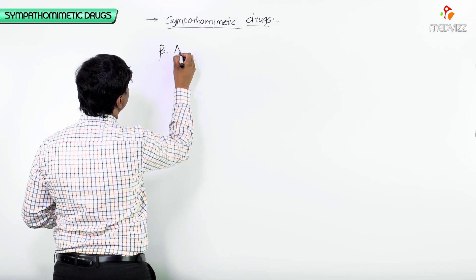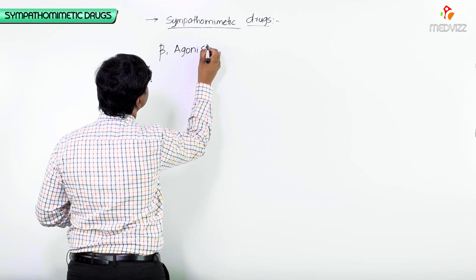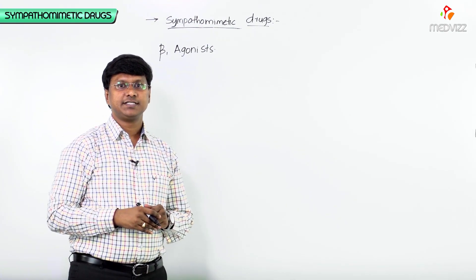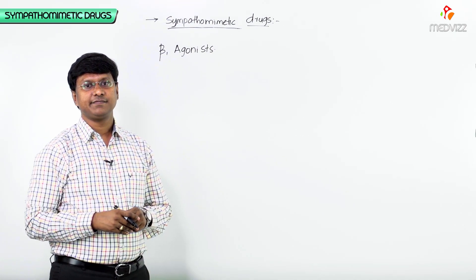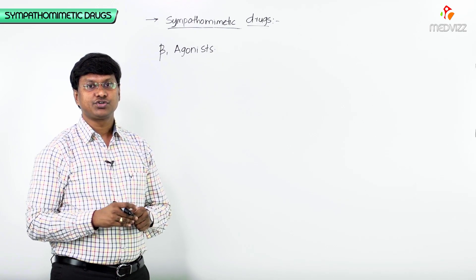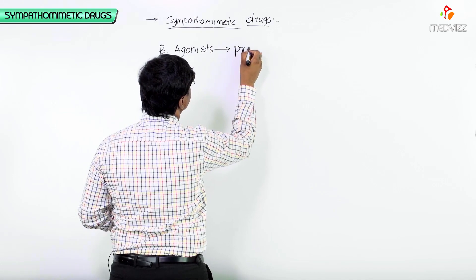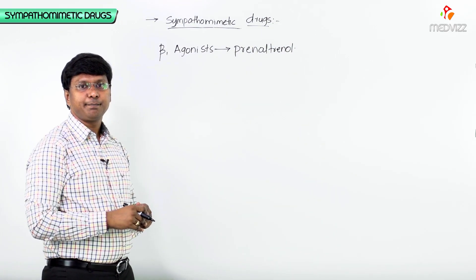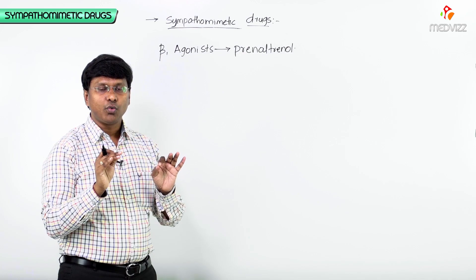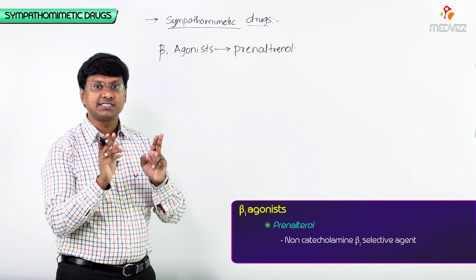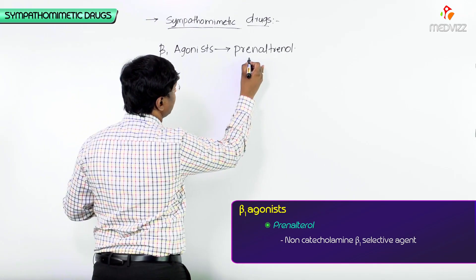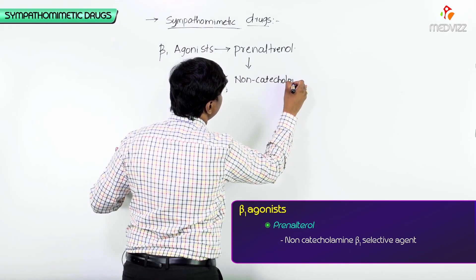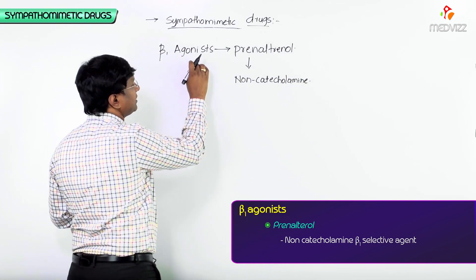Let me first take up the beta1 agonists. The example we have is Prenalterol. Remember, this particular Prenalterol is the only non-catecholamine beta1 selective agent. It is a non-catecholamine and this is the only non-catecholamine which selectively acts on the beta1 receptors.